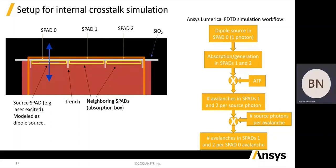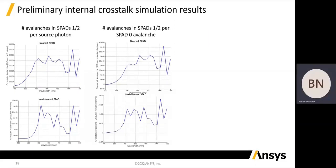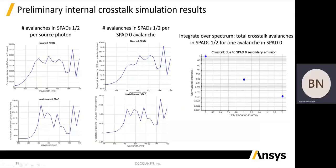In the previous section, we calculated the photon production spectrum in units of the number of photons per avalanche per wavelength, which when used here allows us to convert the result to the number of crosstalk avalanches for a single source avalanche per wavelength. Here we can see the number of avalanches in SPADs 1 and 2 for a single source photon. After rescaling with the true photon production spectrum, we obtain the number of avalanches in SPADs 1 and 2 for a single avalanche in SPAD 0. Finally, we can integrate over the spectrum to get a total crosstalk in SPADs 1 and 2 for a single avalanche in SPAD 0. For a single avalanche in SPAD 0, we get around 2% crosstalk avalanche in SPAD 1 and around 0.1% crosstalk avalanches in SPAD 2, which is the second nearest neighbor.